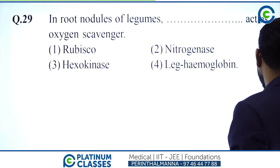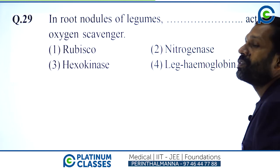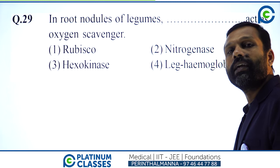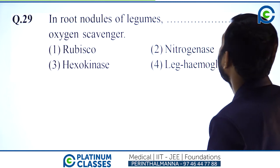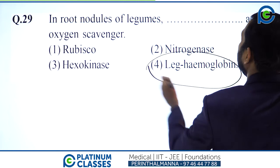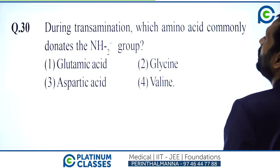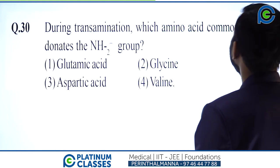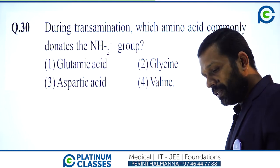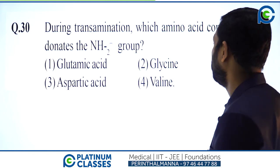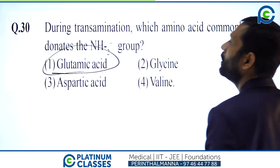In the root nodule of legumes, leghemoglobin acts as an oxygen scavenger — option 4. During transamination, the amino acid that commonly donates the NH2 group is glutamic acid — option 1.